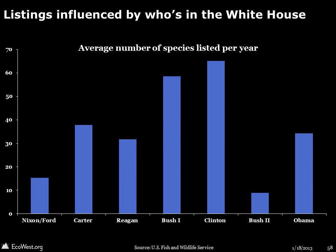Here's another look at the same data, showing how many species were listed as threatened or endangered each year. That sharp decline around 1995 is due to a moratorium on new listings enacted by Congress after the Republican Revolution of 1994. This graphic shows how many species each president listed under the ESA on average per year in office. Environmentalists had a tough time getting species listed during George W. Bush's two terms, and the rate under Ken Salazar's Interior Department is less than half the rate when Bruce Babbitt was in charge during the Clinton administration.